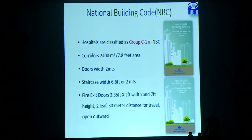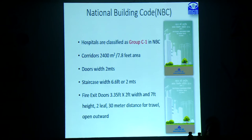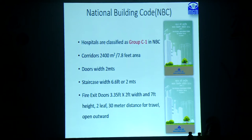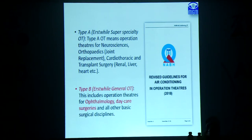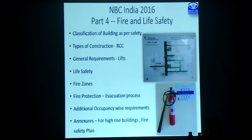Coming to the National Building Code, we have two booklets — part one and part two — available online and for sale. Hospitals are classified mostly in group C1 in NBC. There are certain parameters according to size, door width, staircases, and fire exit doors, all standardized and mentioned in detail in this booklet. The NBC India 2016 is the latest edition. Part 4 covers fire and life safety, which is a very important aspect that cannot be ignored in any hospital infrastructure.